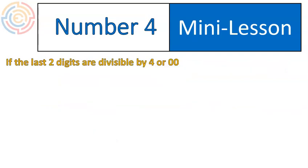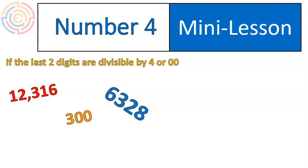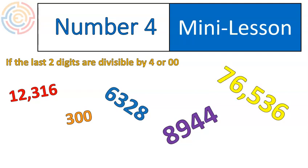Number 4. If the last two digits are divisible by 4, or if the last two digits are 0,0, it is divisible by 4. For example, 12,316 — just look at the last two numbers: 16. 16 is divisible by 4, so this number also has a factor of 4. 300 ends in two zeros, so it has a factor of 4. Similarly, 6,328 because 28 has a factor of 4; 8,944 is also divisible by 4; and 76,536 ends in 36, which has a factor of 4, so that number also has a factor of 4.